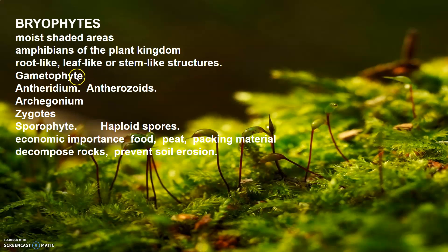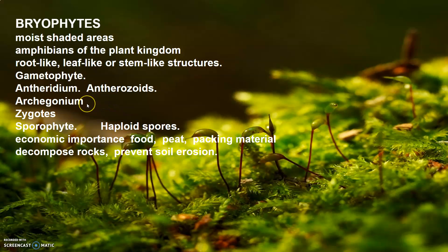The plant body produces gametes and is therefore called the gametophyte. The reproductive organs in bryophytes are multicellular. The male reproductive organs are called antheridium and they produce biflagellate antherozoids — biflagellate meaning with two flagella. The female reproductive organs are called archegonium, which are flask-shaped and produce a single egg. The antherozoids are released into water where they come in contact with the archegonium and fuse with the egg to produce the zygote.